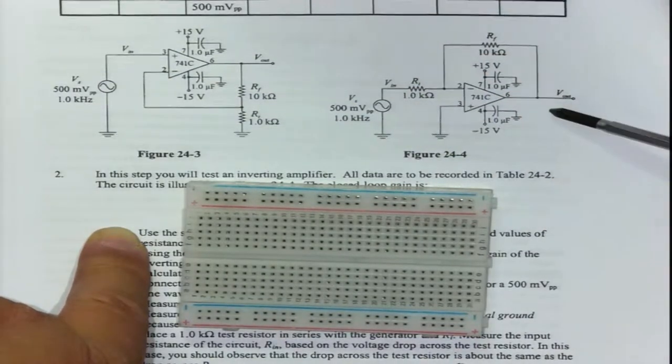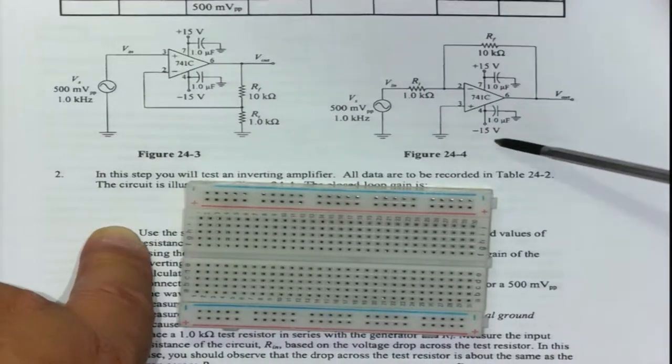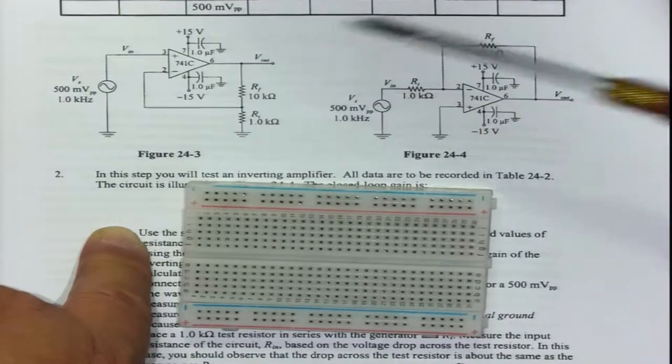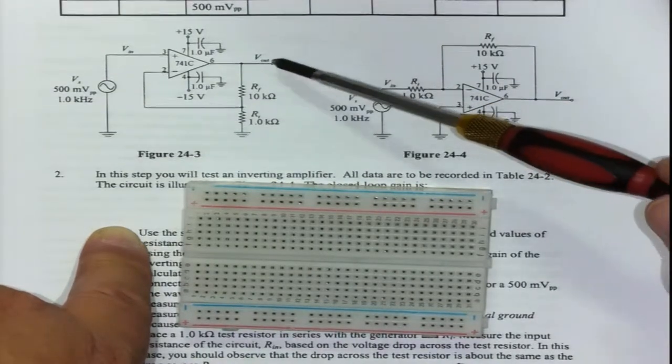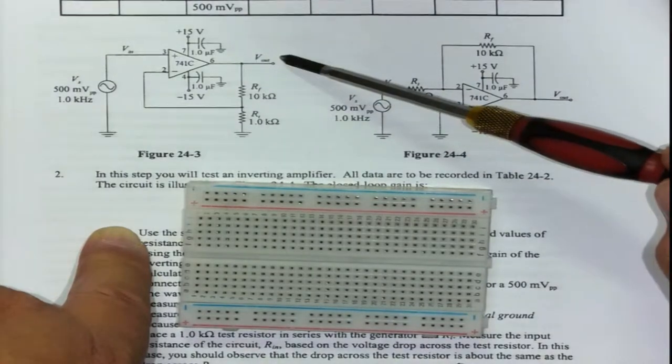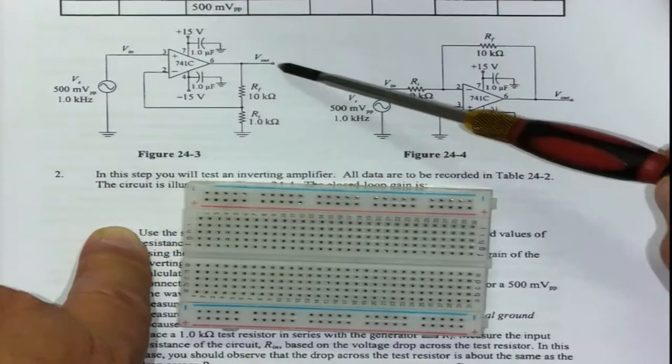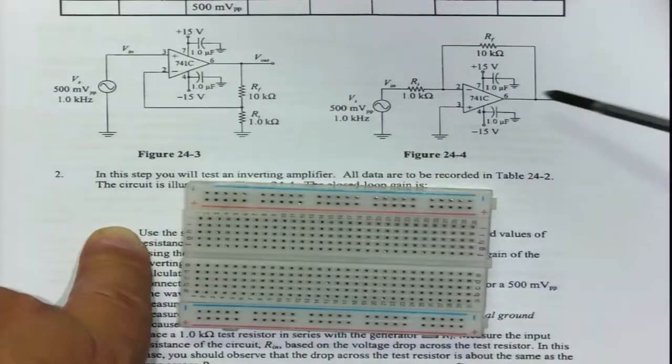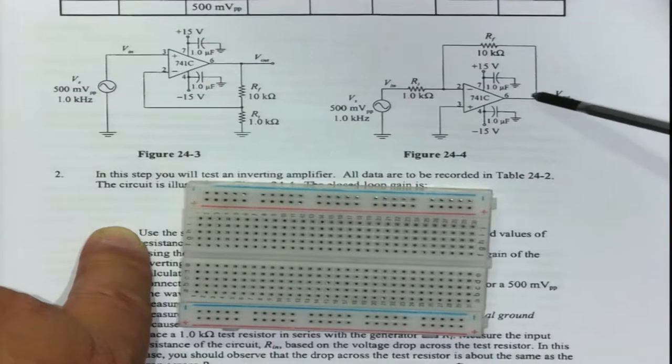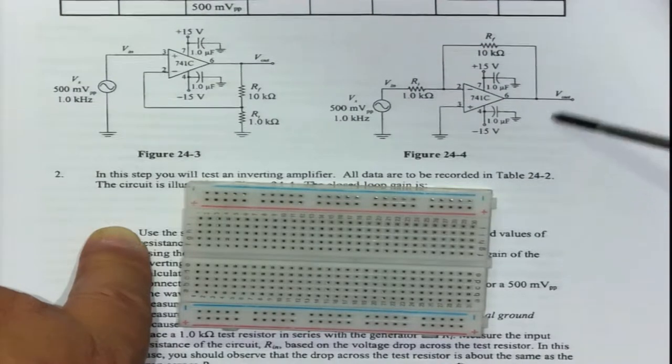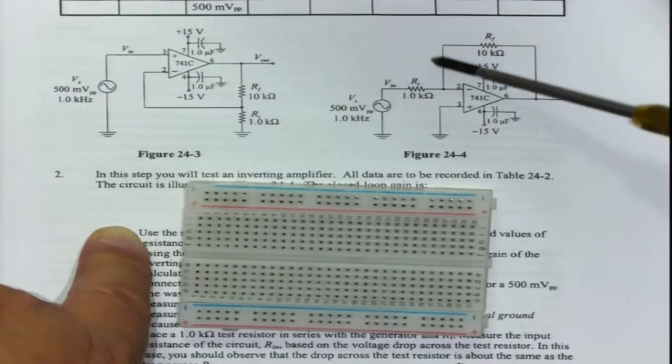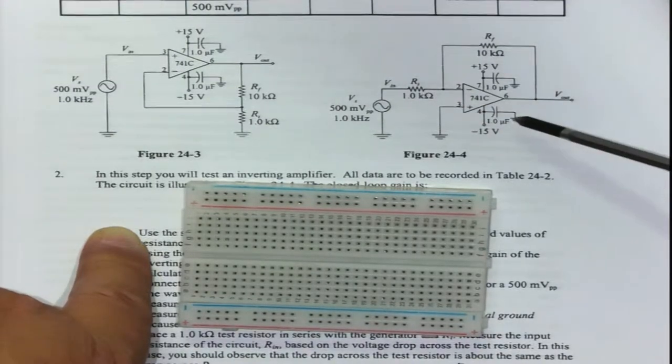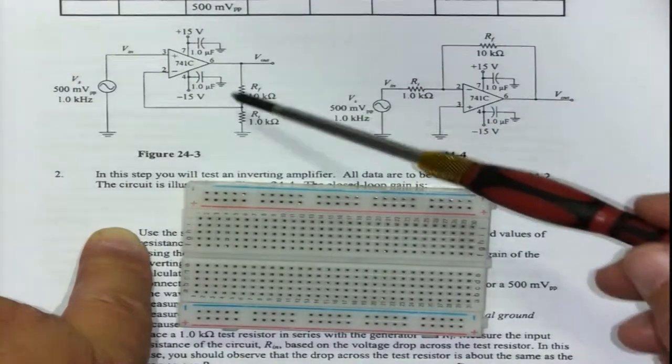The same with the inverting amplifier. The output is taken between the output voltage pin, pin six, and ground. The output actually sits across this resistor circuit here. On the inverting amplifier there's nothing except the feedback resistor connecting to ground. The feedback only goes back to pin two because we need the feedback for the amplifier to amplify.